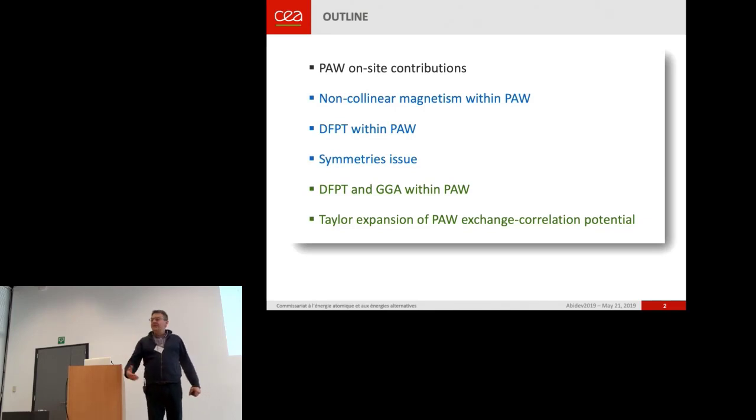And now we are in the way of having non-collinear spin-orbit, GGA, DFPT order one, two, three, and so on. And I had some work in last November to adapt everything to that because I was not able to mix all this formalism.